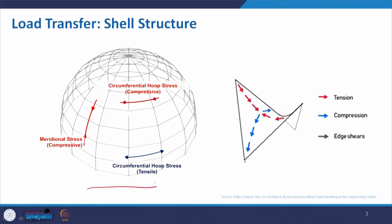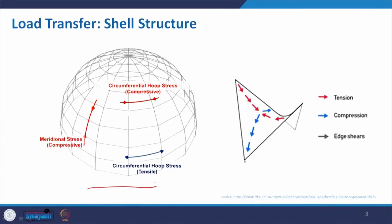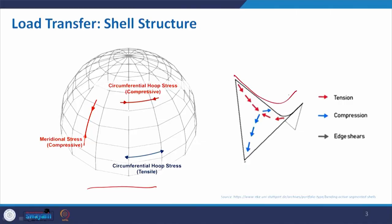Before we discuss natural shells and where we are inspired from, let us also understand the transfer of load. This diagram is common to you now because I have used it in the presentation where we covered dome structures. Similarly here, curvature in one case can make a dome, in another case it may develop an arch, sometimes a vault, and sometimes structures with anticlastic curvatures. We will come to what anticlastic and other types of curvature mean.